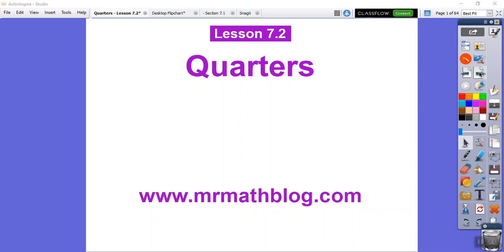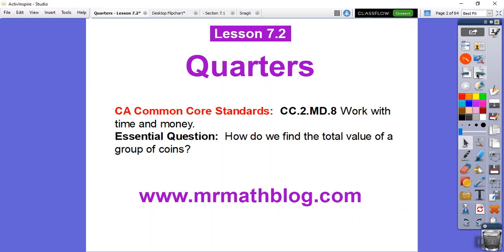This lesson is on quarters. In the last lesson, we did dimes and nickels. A dime was 10 cents. Nickel is 5 cents. Quarters are 25 cents. Here's our common core strand for our most awesome teachers. We're going to work with time and money. In this lesson, we're working with money.